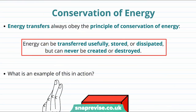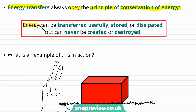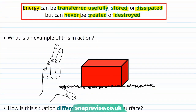We've seen a lot of examples of energy transfers, and it turns out that all energy transfers obey a certain rule: they always obey the principle of conservation of energy. The rule is this: energy can be transferred usefully, stored or dissipated, but it can never be created or destroyed. Let's see an example of this law in action.